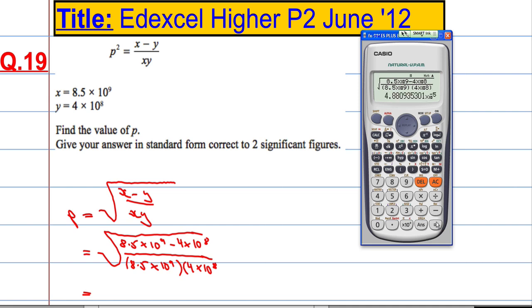Once we've got that in, we get 4.880935301 by 10 to the power of minus 5. I want my answer to two significant figures. Let's just write this down.